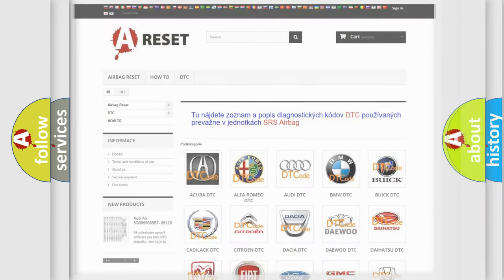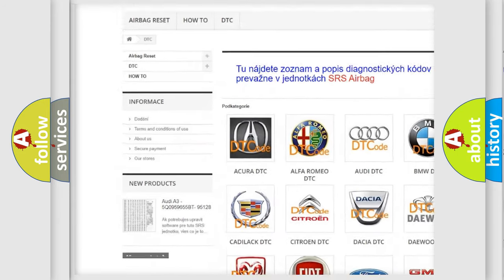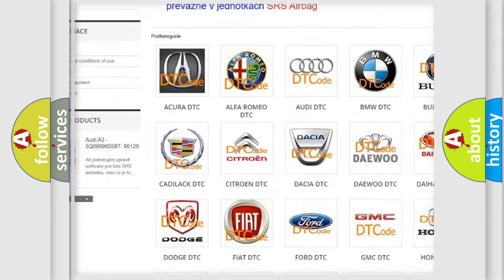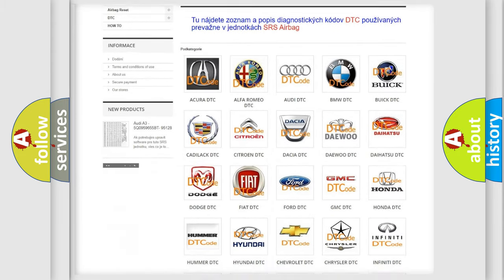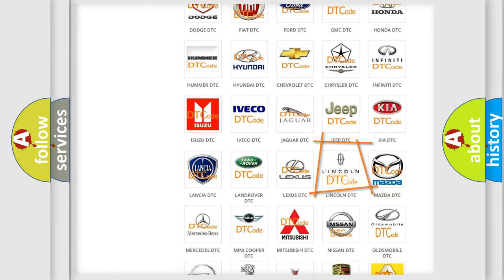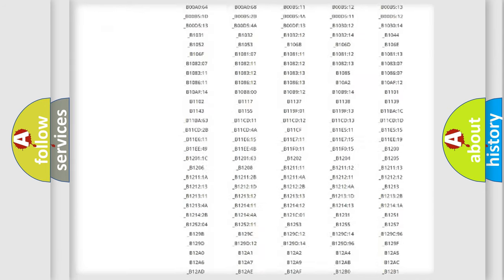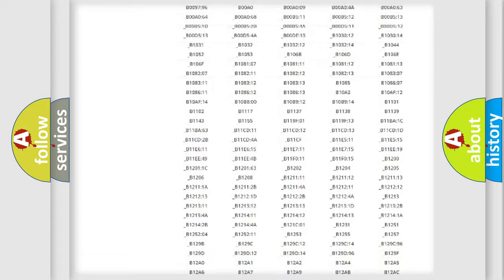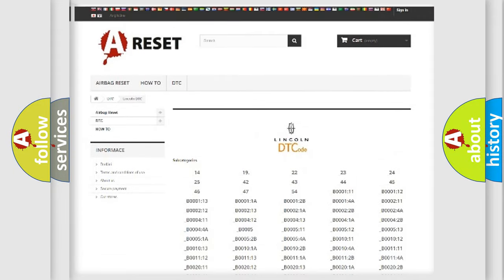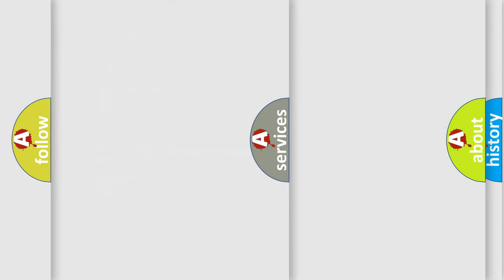Our website airbagreset.sk produces useful videos for you. You do not have to go through the OBD2 protocol anymore to know how to troubleshoot any car breakdown. You will find all the diagnostic codes that can be diagnosed in a link and vehicles, and many other useful things.